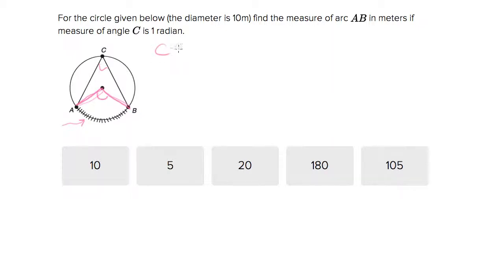All right, so they told us C has a measure of one radian. Well, that must mean that, let's call this one X. X has a measure of two radians. Okay, that's something you just have to memorize and know. So inscribed angles are half of radius angles, of angles that come from the center.